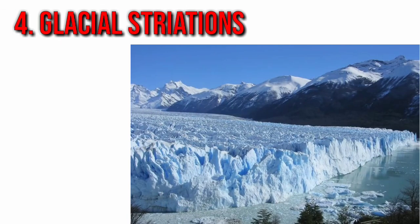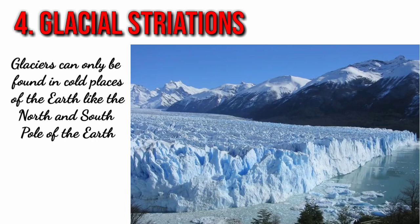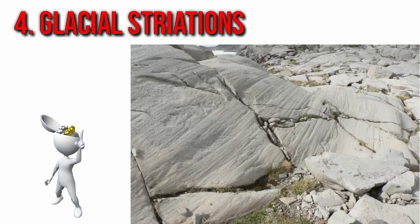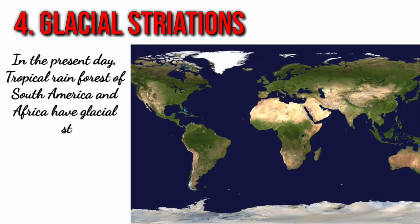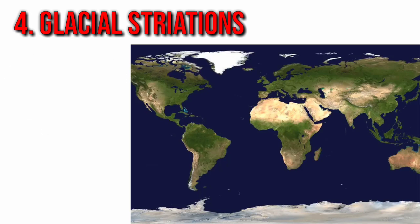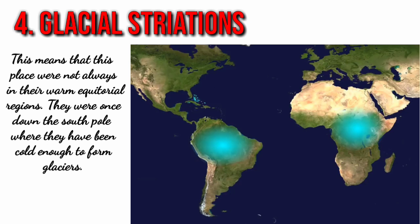Another evidence is glacial striations. Glaciers can only be found in cold places of the earth, like the north and south poles. Something interesting about glaciers is that they move, and when they move over the rock beneath, they leave evidence in the form of scratches called glacial striations. In the present day, the tropical rainforests of South America and Africa have glacial striations. This means these places were not always in their warm equatorial regions — they were once down near the South Pole, where it was cold enough to form glaciers.